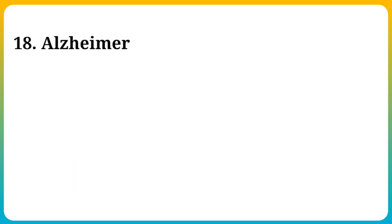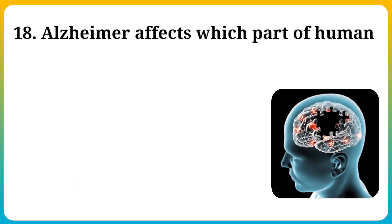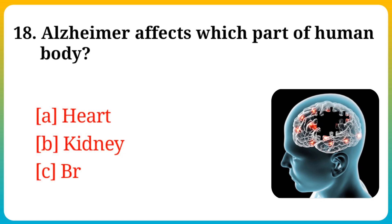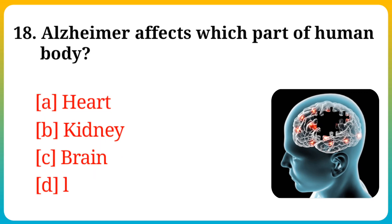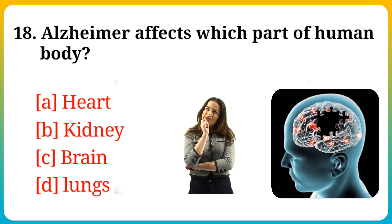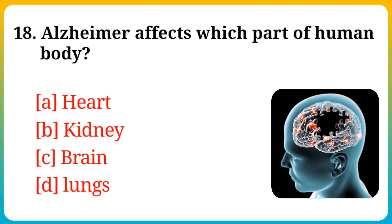Question number 18. Alzheimer's affects which part of the human body? Option A: Heart, B: Kidney, C: Brain, D: Lungs. Answer is option C: Brain.